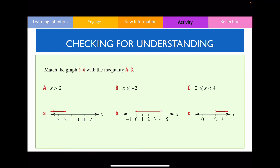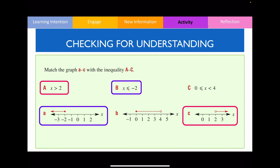Have a go answering these three questions where you have to match the linear inequality with its respective graph. For x > 2, you use an open circle with numbers larger than 2, so A is paired with C. For x ≤ -2, it matches up with graph A. Therefore the leftover pairs C with graph B.